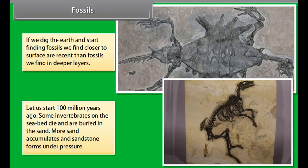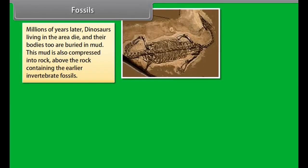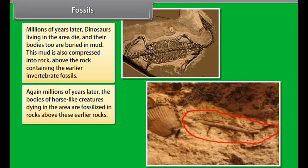Homologous organs are those organs which have the same basic structure but different functions. For example, the four limbs of a frog, bird, and man are built from the same basic design of bone but perform different functions like jumping, flying, and grasping. Analogous organs are those organs which have different basic structures but the same functions. For example, wings of insects and birds have different structures but perform the same function of flying.